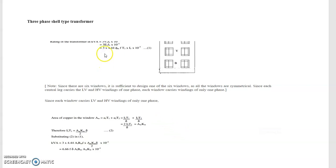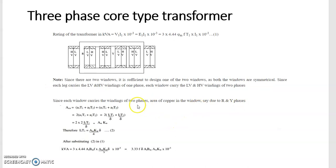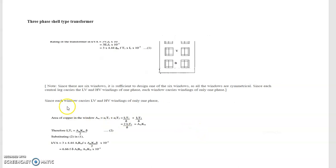Now talking about the 3-phase shell type transformer. We already have derived the single phase equation — multiply it by 3. Since there are 6 windows in shell construction, it is sufficient to design one of the 6 windows. Each window carries the low voltage and high voltage winding of 1 phase only — unlike the core type where each window carried windings of 2 phases.